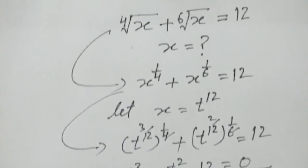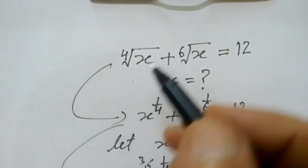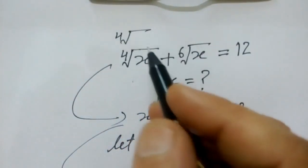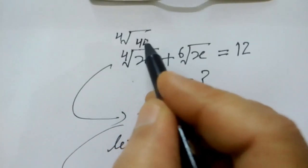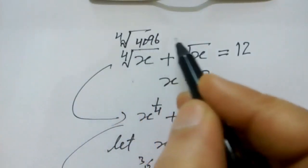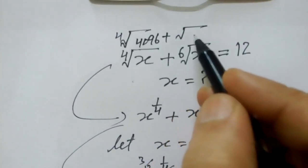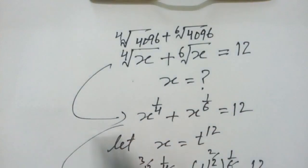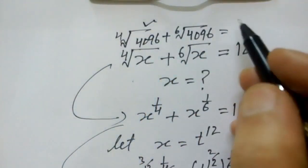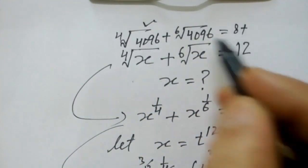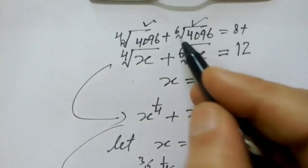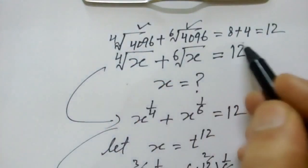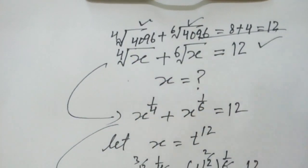We can verify: the 4th root of 4096 plus the 6th root of 4096. The 4th root gives 8, and the 6th root gives 4, so 8 plus 4 equals 12. Confirmed! Okay friends, thank you.